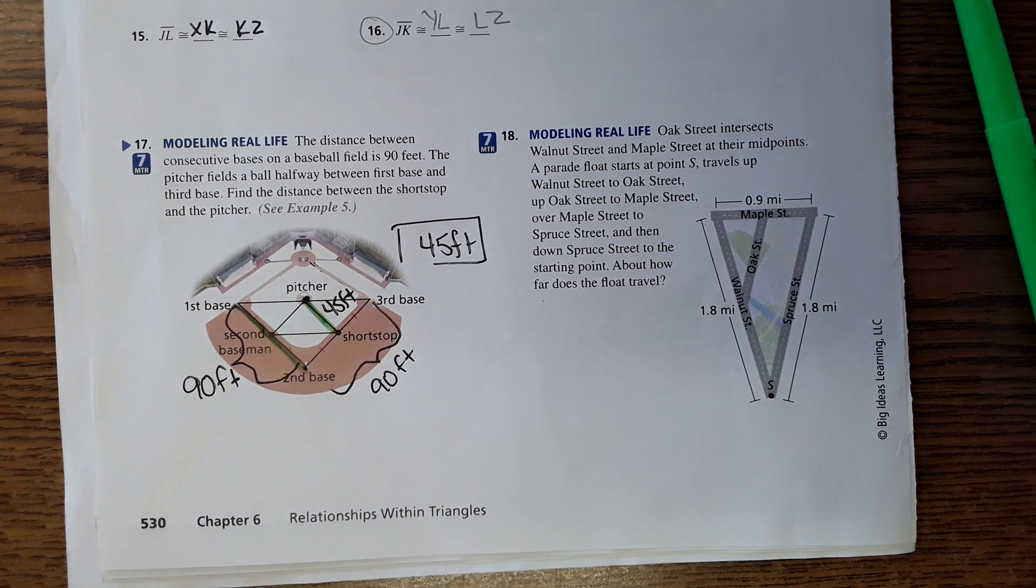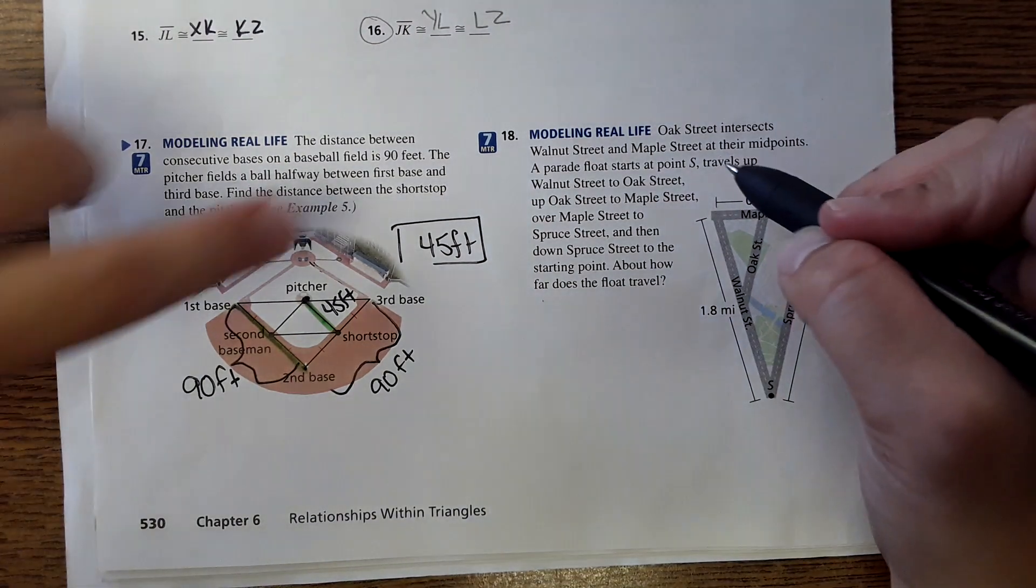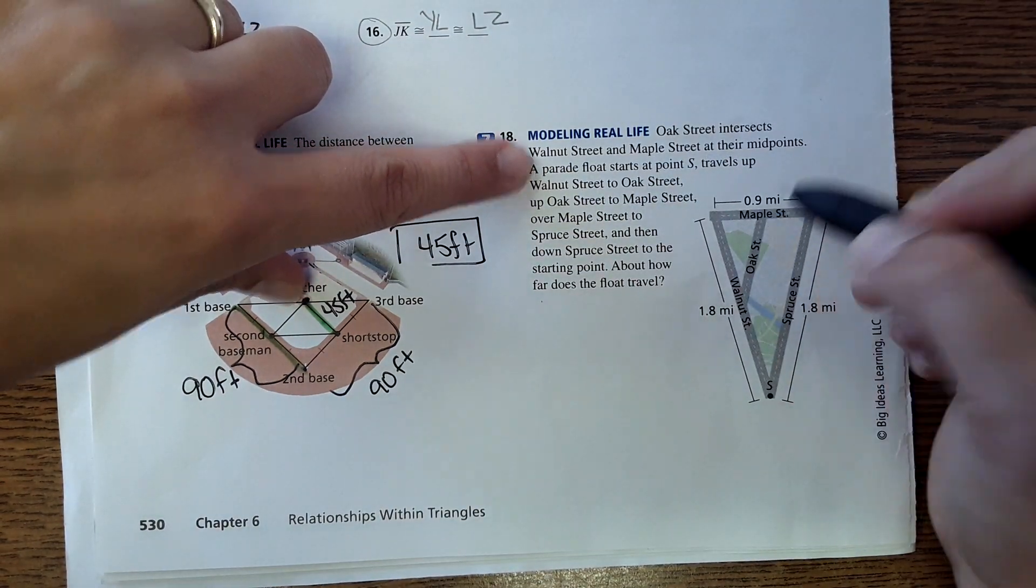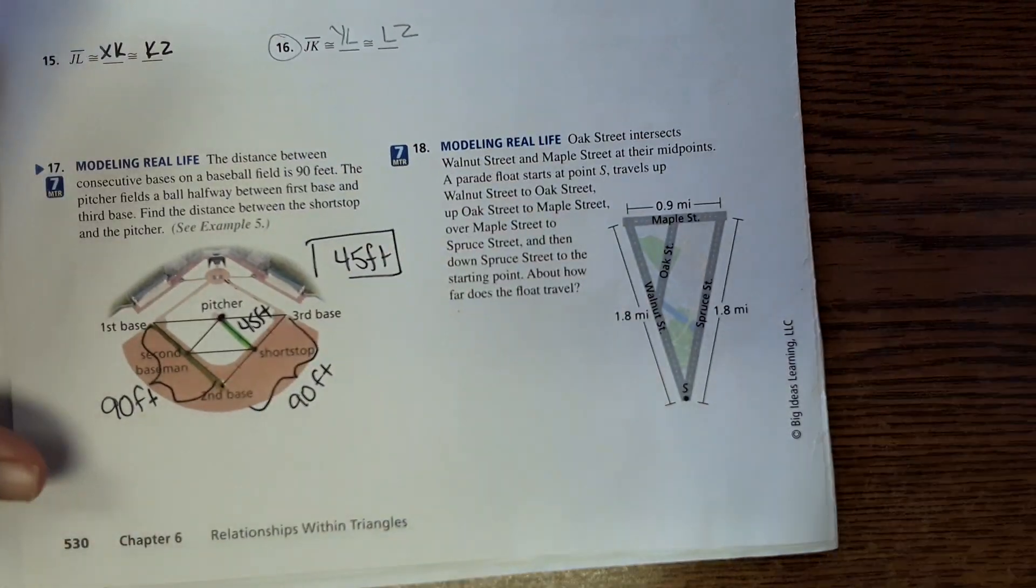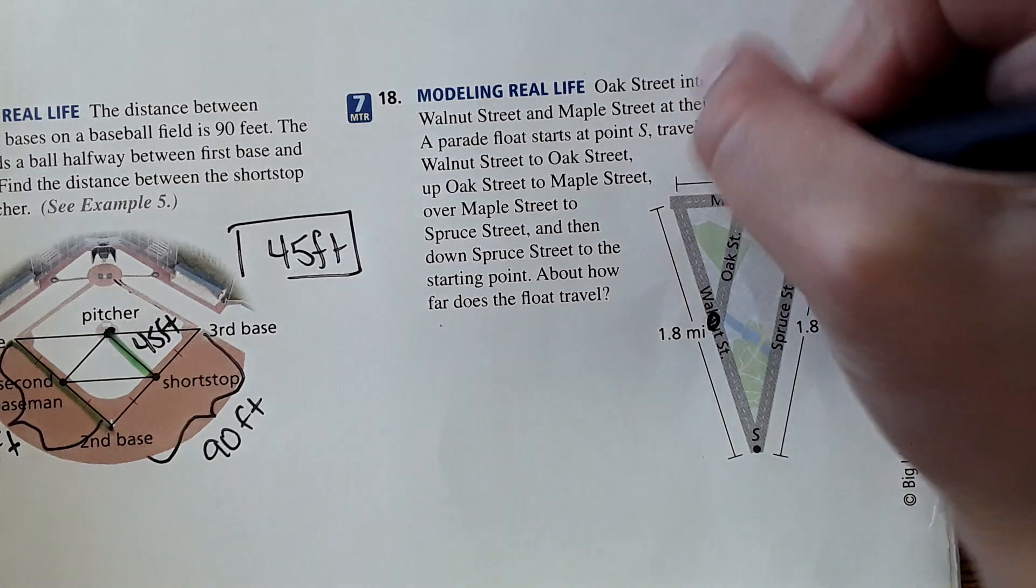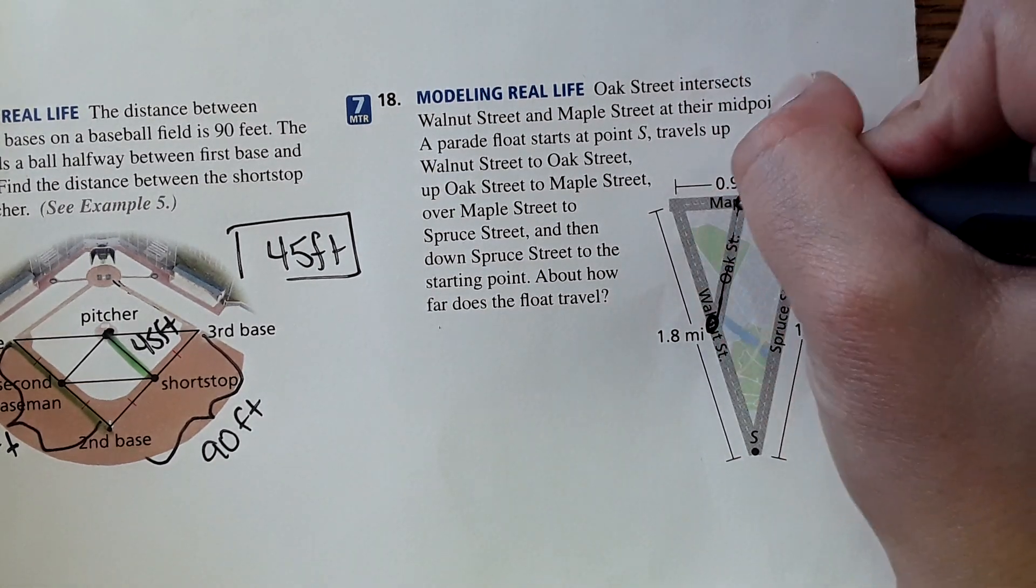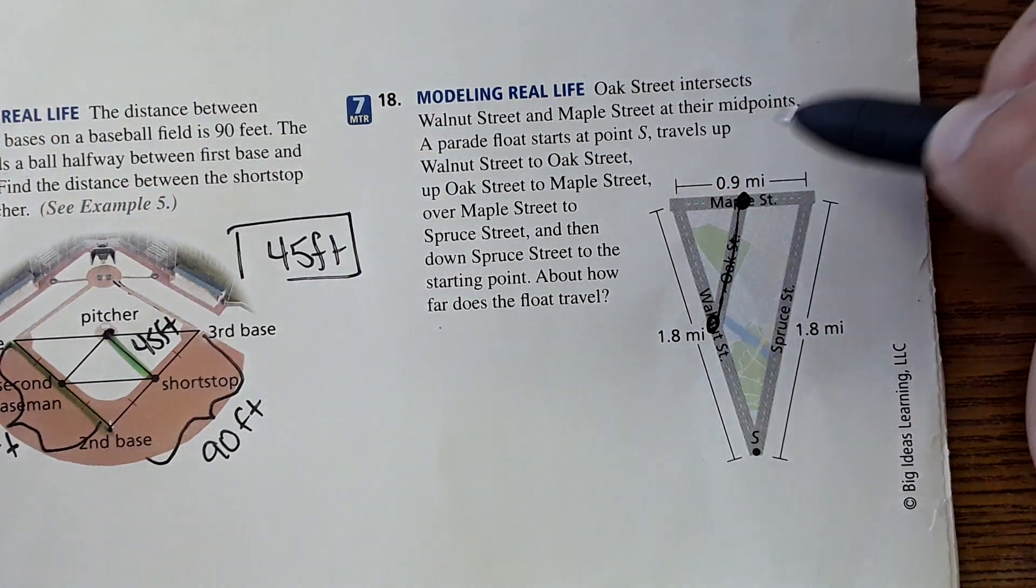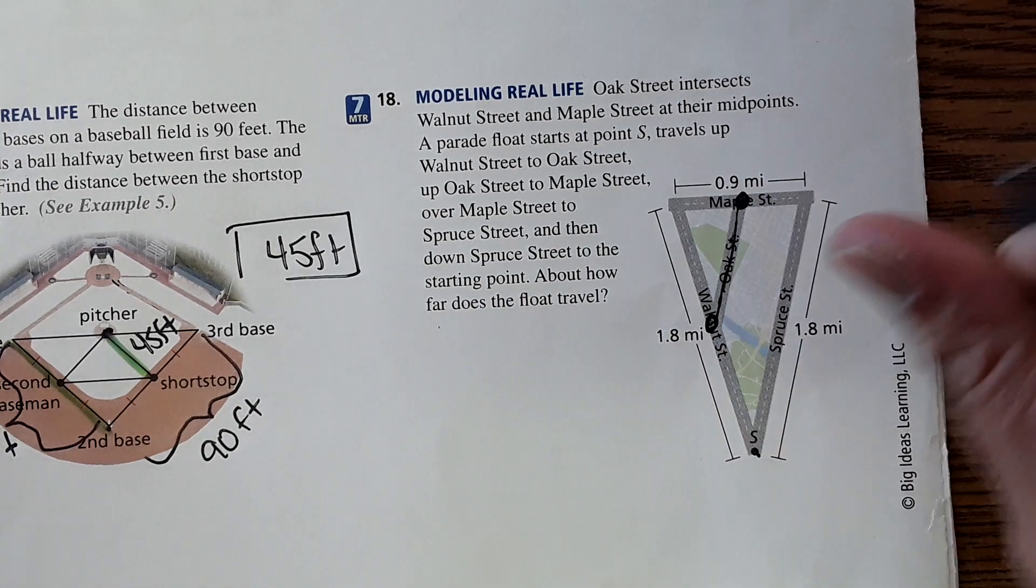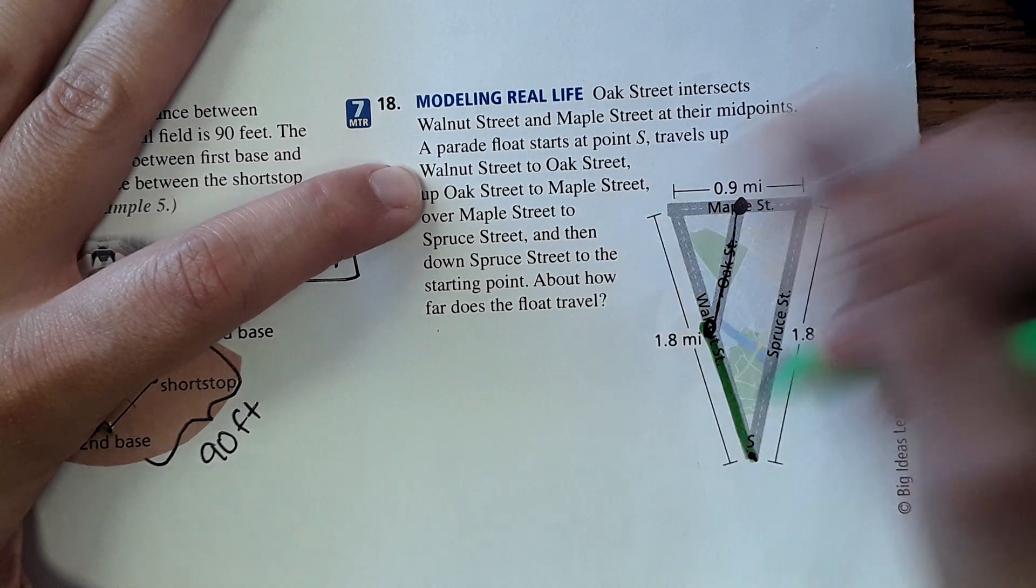Okay, and then number 18, it says modeling real life: Oak Street intersects Walnut Street and Maple Street at their mid points. Okay, I'm gonna zoom in. It says Oak Street right here intersects at the mid points, so that means this is a mid segment. A parade float starts at point S and travels up Walnut Street, so from S to Walnut Street right here.